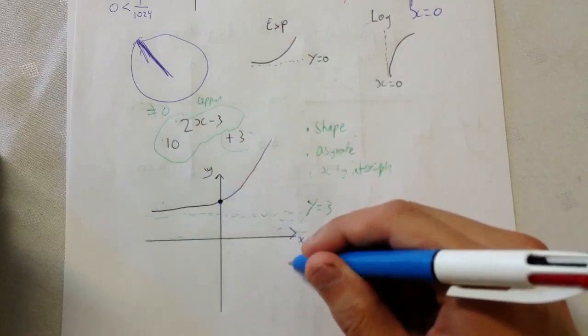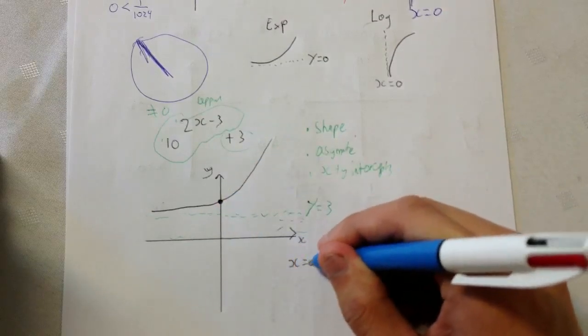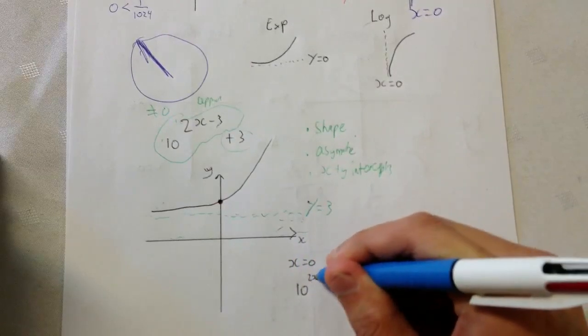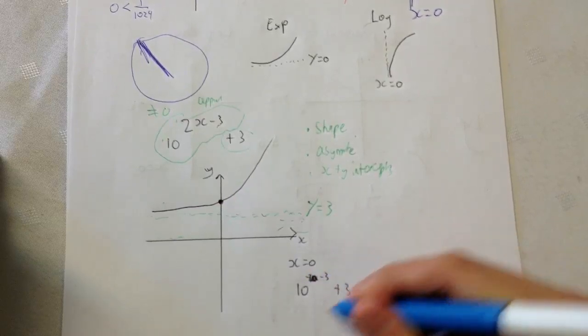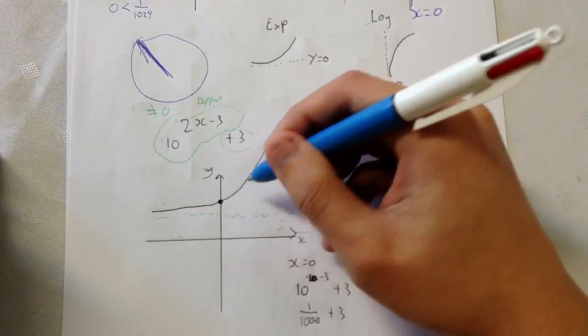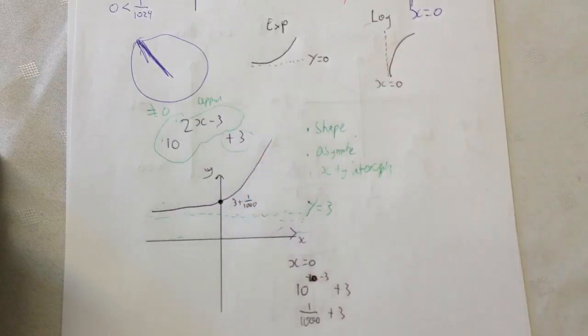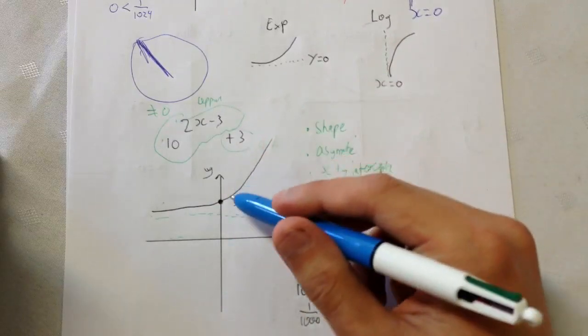So the y intercept is when x equals zero. We get 10 to the 2x minus 3. But x is now zero. So it becomes 10 to the minus 3 plus 3. It becomes 1 on a thousand plus 3. So it's up here. We can just go 3 plus 1 on a thousand. Yeah. And that's how you draw an exponential graph.